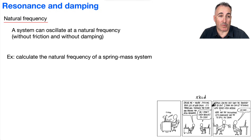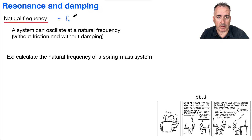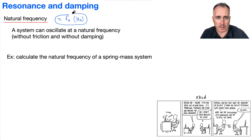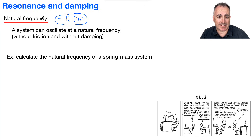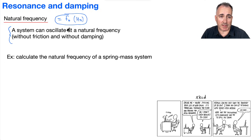We're going to be talking about resonance, actually, and damping. So first of all, let's talk about natural frequency — we're going to call that F0, that's normally how we write it, and we measure it in hertz. Natural frequency is this F0 because a system can oscillate at a natural frequency. We're assuming there's no friction or damping, but basically if you hit something or vibrate it at a very specific frequency, then you can make its amplitude go bigger and bigger and bigger.